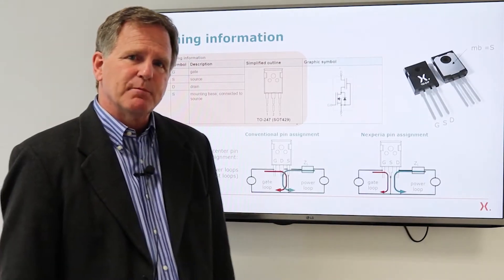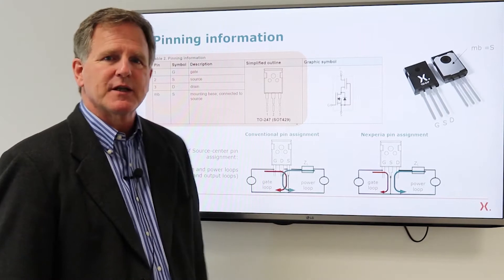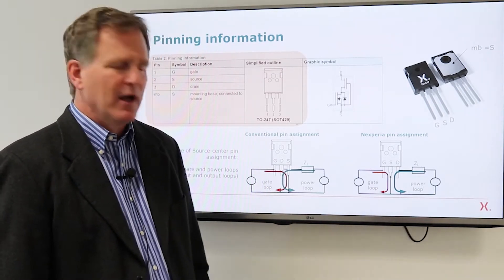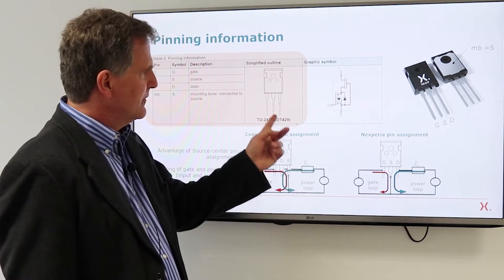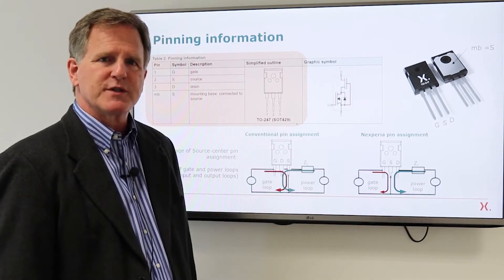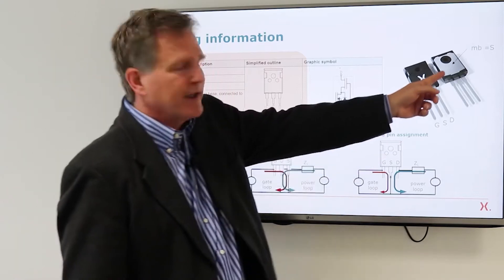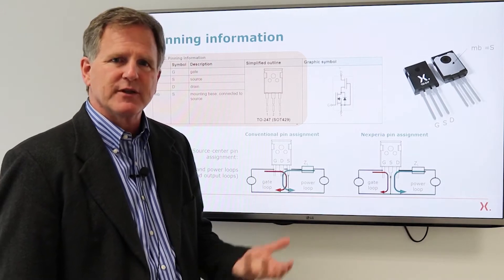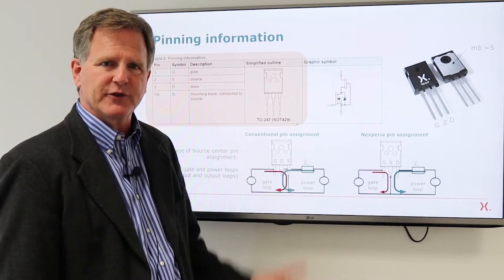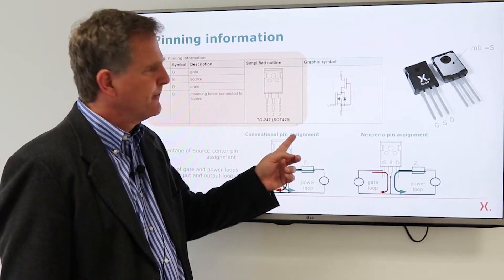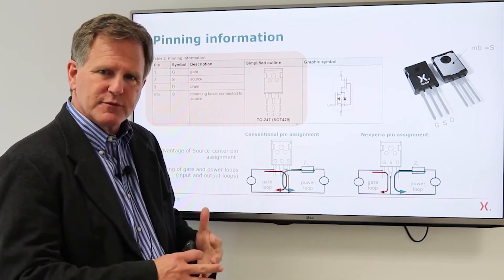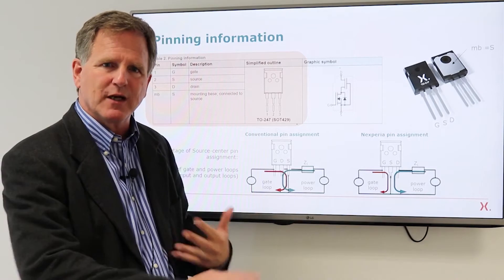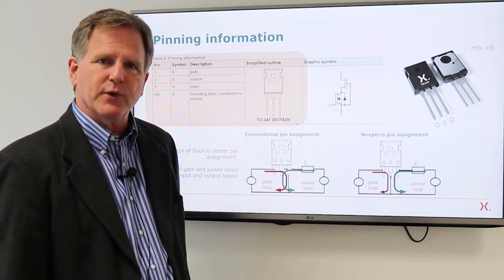First section is pinning information. Now this device comes in the traditional TO247 package, very familiar to power circuit designers. One thing that's not familiar is the pin assignment. The source is in the center and it's also connected to the mounting base, the tab on the back of the package. Conventionally with the IGBTs or MOSFETs, this would be the drain or the collector. The reason we do that is to make it easy for you to separate the input and the output loop to decouple the two, which is important for a high-speed switch.